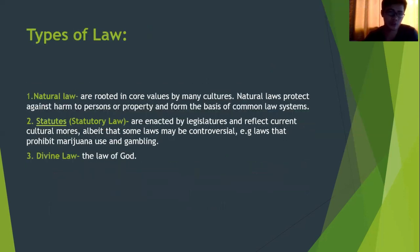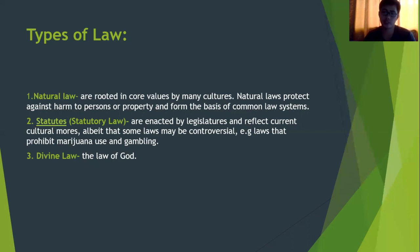Regarding types of law: Natural law is rooted in core values shared by many cultures. Natural laws protect against harm to persons or property and form the basis of the common law system. Statutory law consists of laws enacted by legislatures reflecting current cultural norms — some may be controversial, such as laws prohibiting marijuana use and gambling. These are also known as mala prohibita — acts wrong because there is a law against them. Natural law, by contrast, covers acts wrong by their nature, known as mala in se. We also have divine law, which is the law of the supreme being or the law of God.